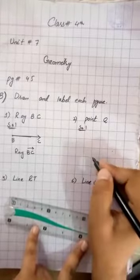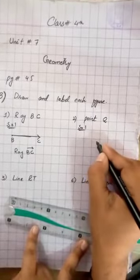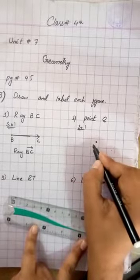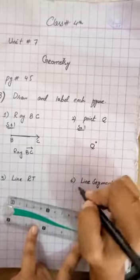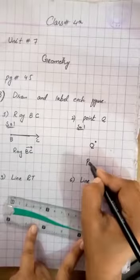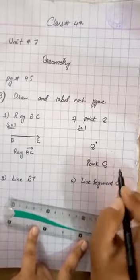Next, point Q. Point is very easy. You will draw a point. What do you draw? Point Q. You will label it. The answer is point Q.